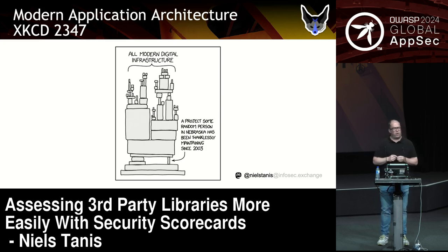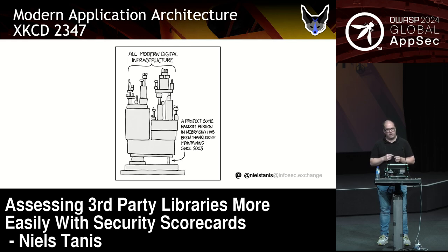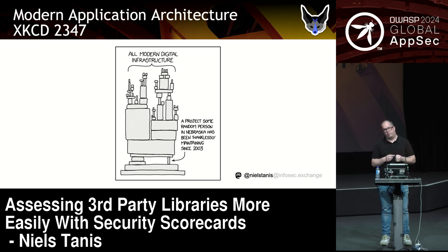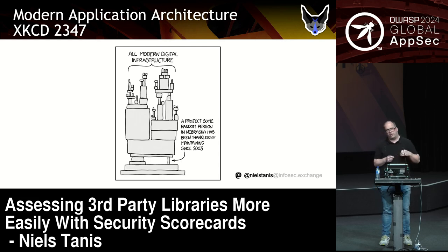I've used this drawing the last two years for each of my talks. Everybody probably knows XKCD — the SQL injection one is the most famous. But this one has to do with modern application architecture. We stack stuff on top of each other, relying on open source libraries that are already there, which I think is a good thing. But we put a lot of trust by piling up those bricks. If something goes wrong with that one single brick at the bottom, which has thanklessly been maintained since 2003 by somebody, that's a risk.